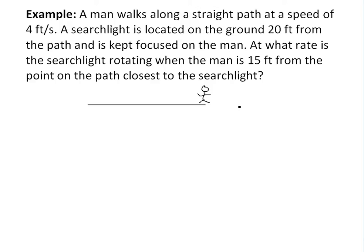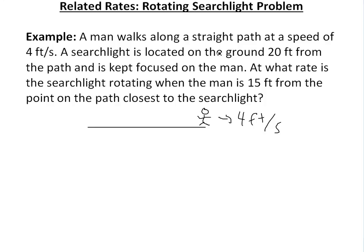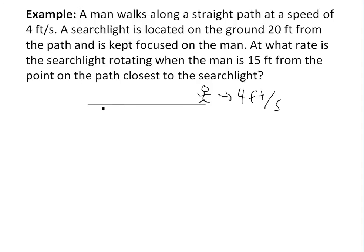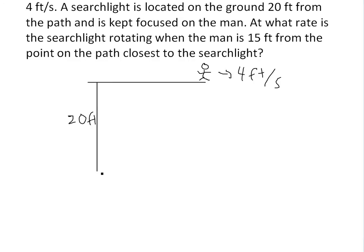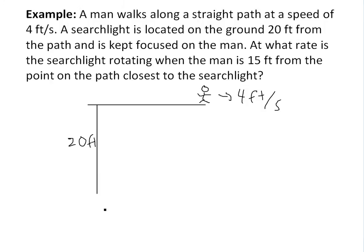So that's him walking and he's walking at 4 feet per second. Now it's saying the searchlight is located on the ground 20 feet from the path. If this is the path, we'll assume it's a perpendicular distance. So I'll draw a line like this — this is 20 feet. When it's saying distance from it, if the path is just a straight line, obviously 20 feet is going to be perpendicular away from it.